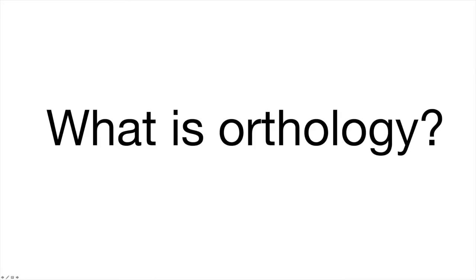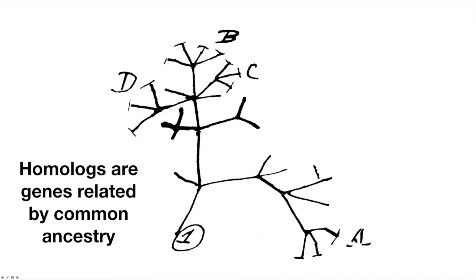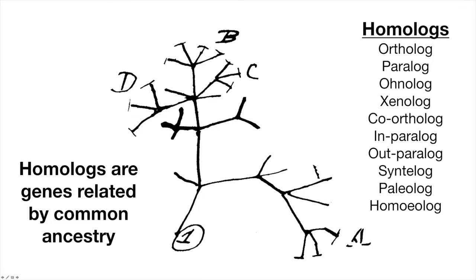Before going more into what Swiss Orthology offers, it's necessary to answer that nagging little question: what exactly is orthology? We must first start from the beginning. Evolution is one of the fundamental principles of biology. A major concept in evolution is that of homology, or the relationship between genes related by a common ancestry. From this general homologous relationship, pairs of genes might be classified into various subgroups of homologues, including ortholog, paralog, xenolog, or homeolog, among others. The two main types we will discuss are orthologues and paralogues.